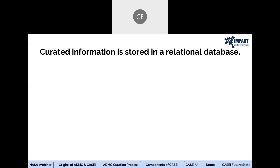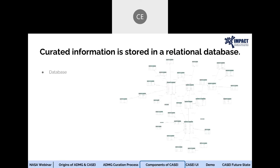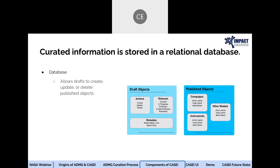Now let's really delve into the nuts and bolts of KC. At its core, KC is an information knowledge center. KC metadata are stored in a PostgreSQL relational database that's hosted on an Amazon Web Service relational database service instance. This setup supports the content curation and approval process. The database, through the use of drafts, allows for objects to be created, updated, or deleted, and for the status to reflect where an object is in the curation process. It also allows for relationships between published objects to be easily established and called on at any time. All primary concepts are stored in tables, while metadata tied to those concepts are stored in fields within those tables.